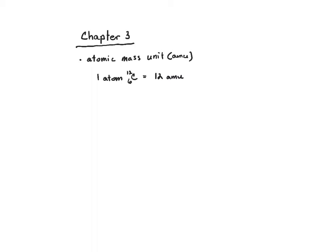A much more accurate description is that one AMU is defined as one-twelfth the mass of a carbon-12 atom. Now this doesn't necessarily serve as that important link between the mass of an atom and the mass we can actually measure out, but it's a step towards that.